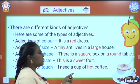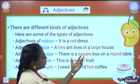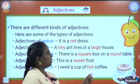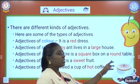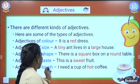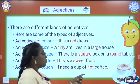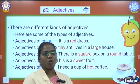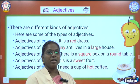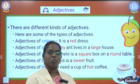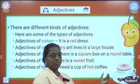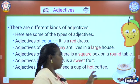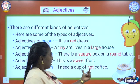Then adjectives of taste — this is a sweet fruit. Whether the fruit's taste is sweet or bitter or sour, we are describing about the fruit. The fruit is so sweet. So sweet is an adjective of taste. And adjectives of touch — I need a cup of hot coffee. When we touch, we feel whether it is hot or cold or soft or fluffy. We can feel whether it is hot or cold. So hot is an adjective of touch.